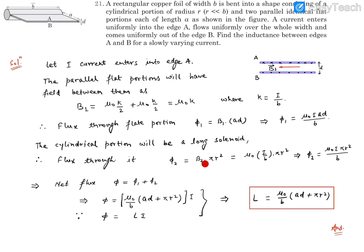B₂ is μ₀nI, where n is the total current per unit length, which is I/b. So B₂ becomes μ₀I/b. πr² is the area.